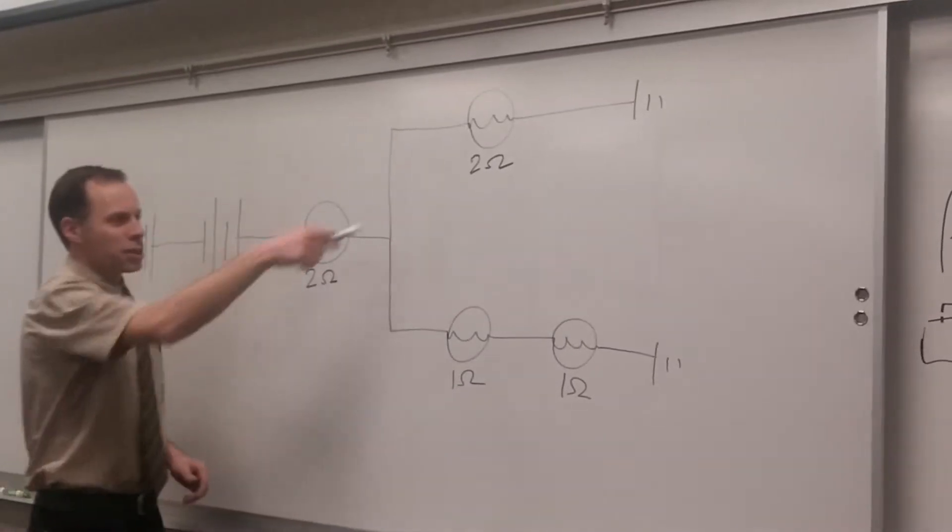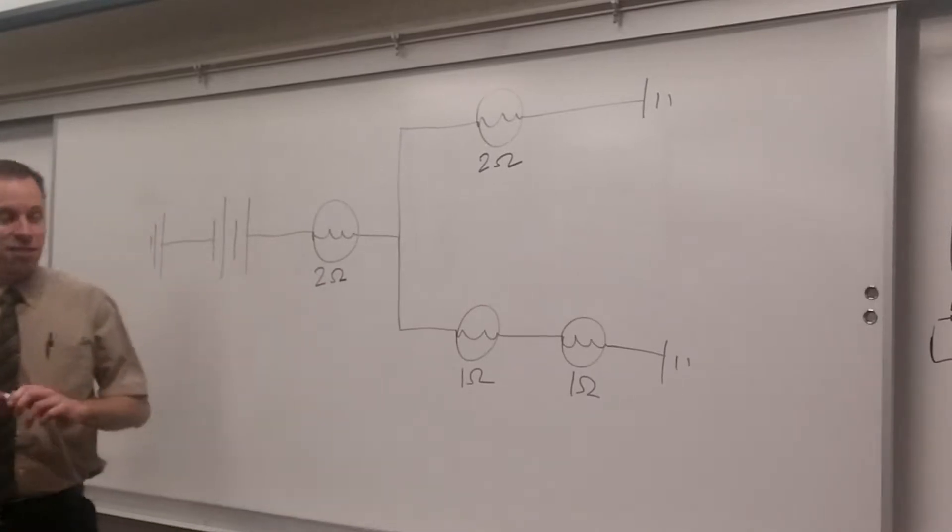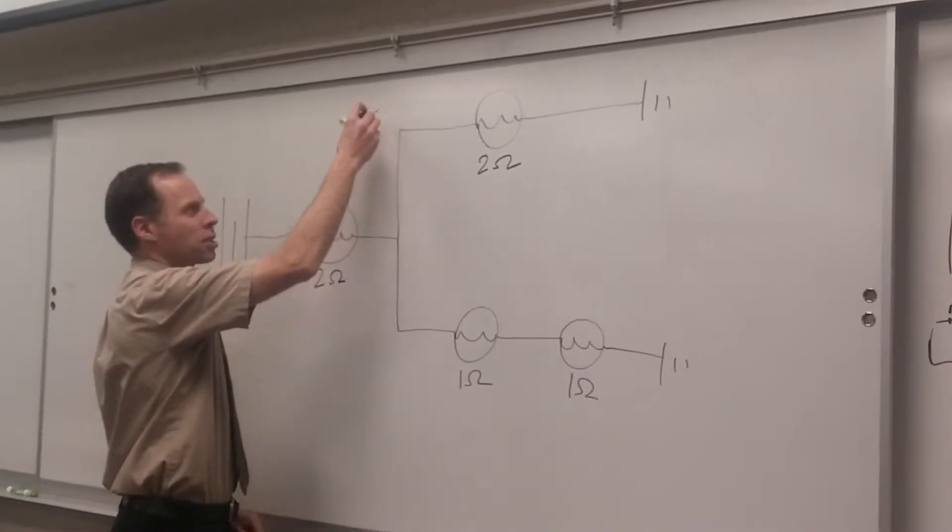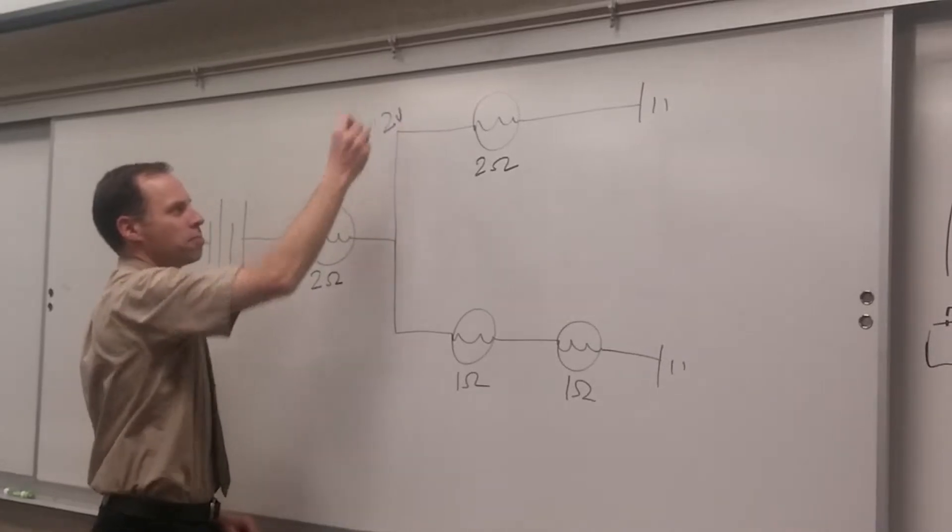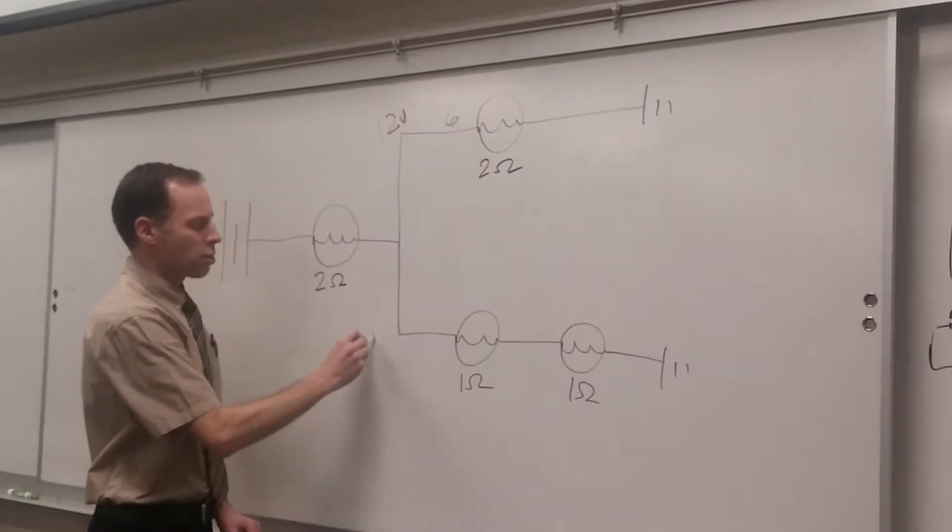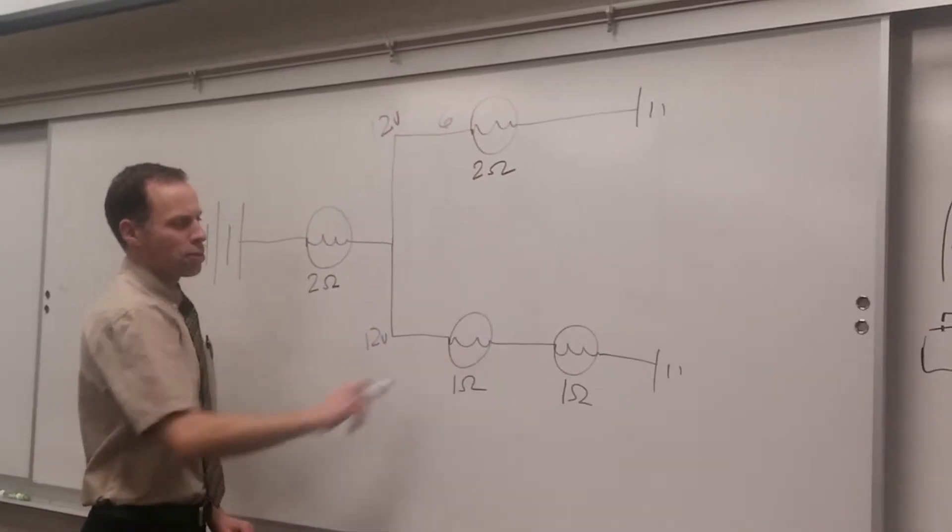So we've got to figure out what this is. The easiest way that I found to do this is to put some imaginary numbers in here. So I'll say if we had 12 volts here, how many amps would flow through this circuit? Six. If I had 12 volts here, how many amps would flow through this circuit? Also six amps.